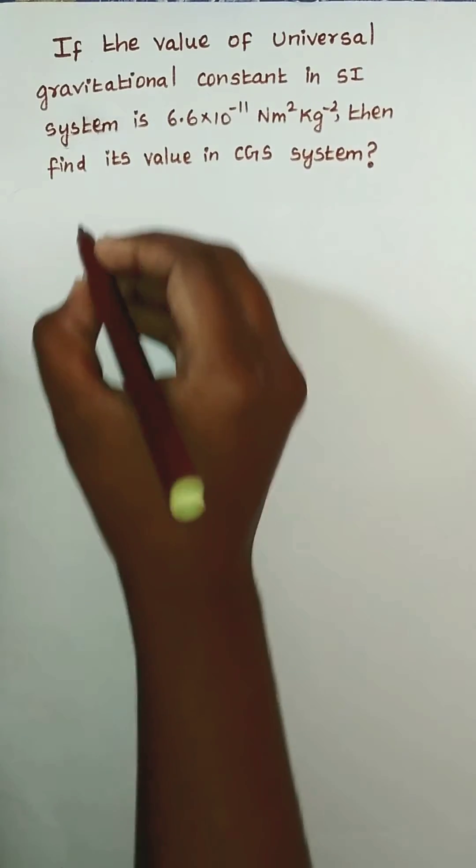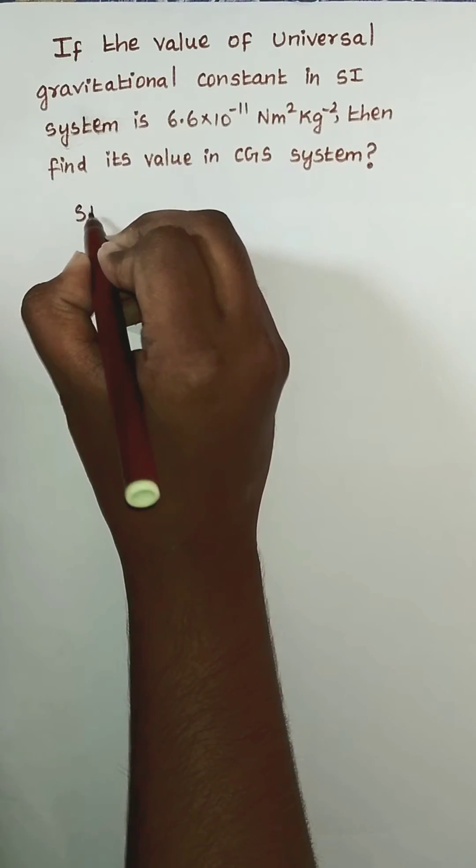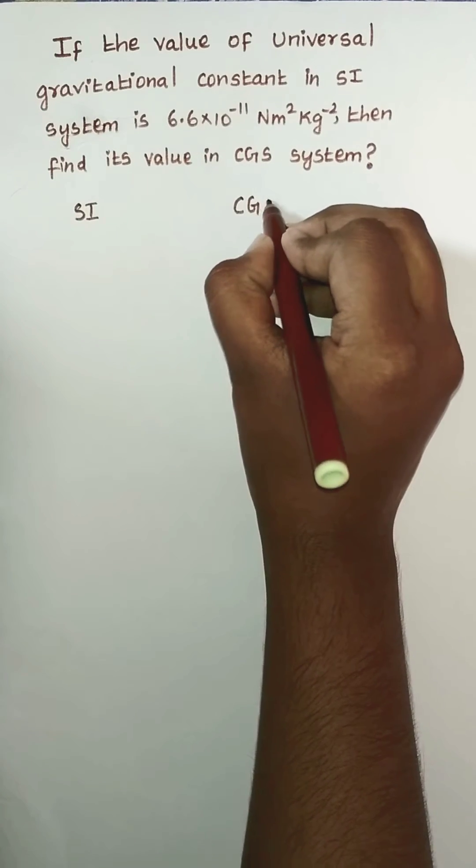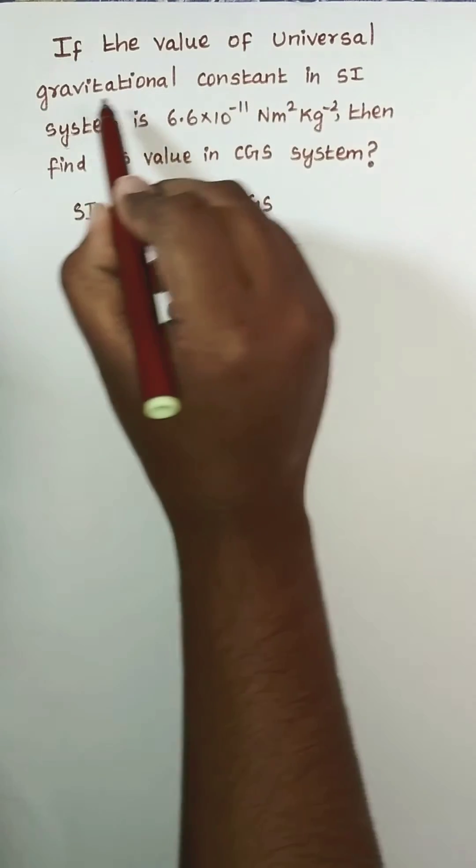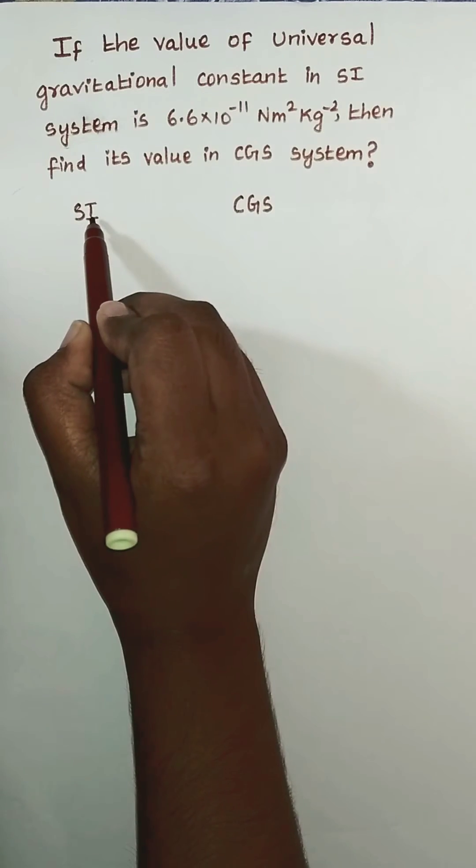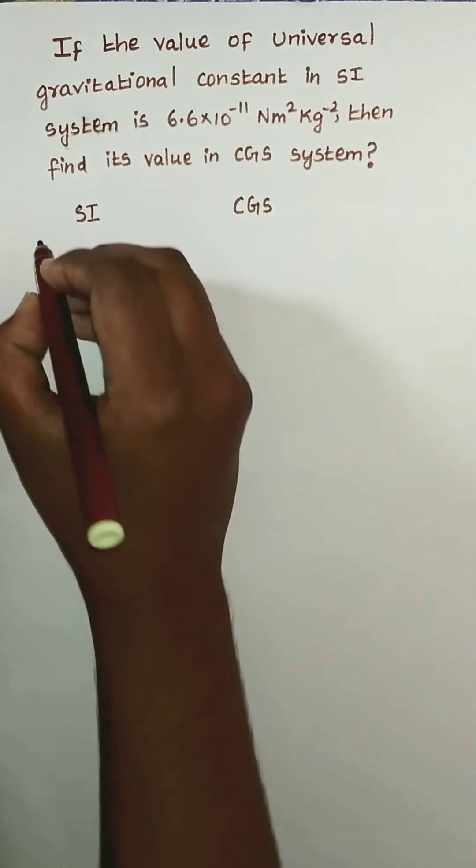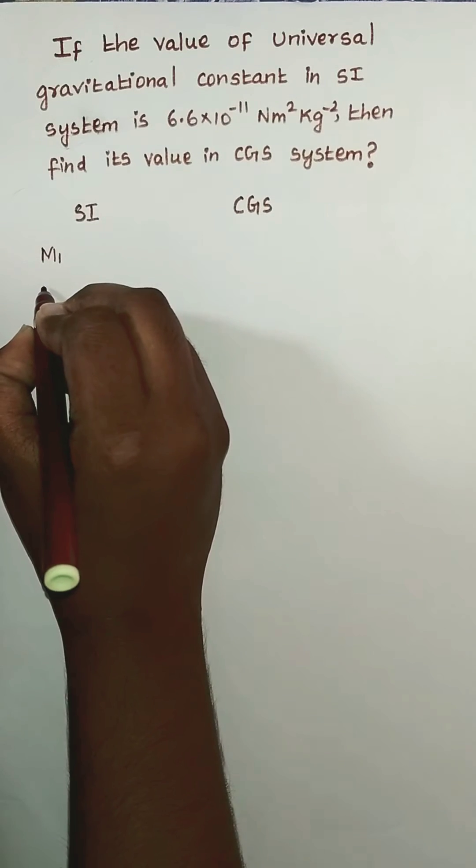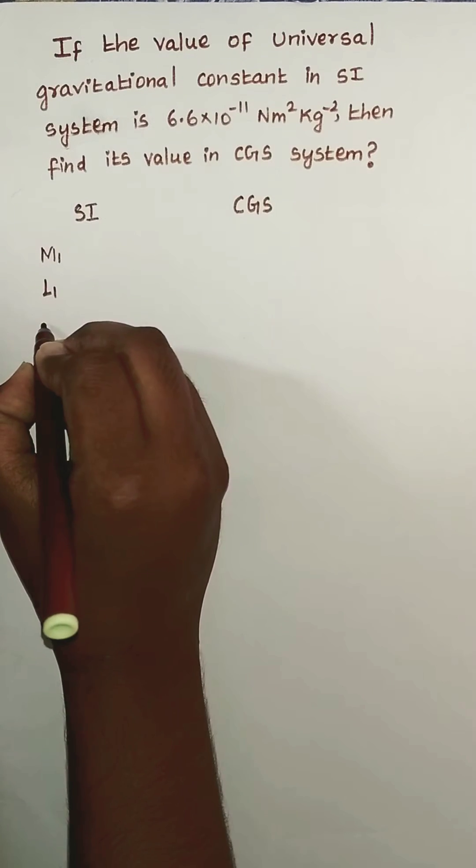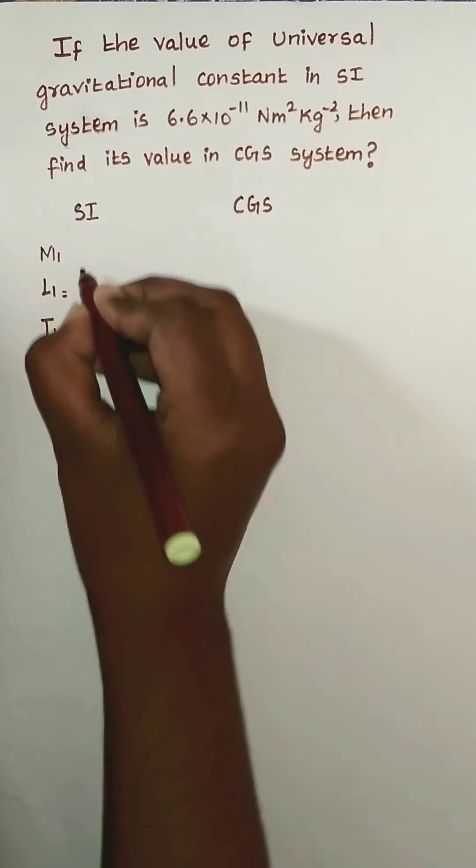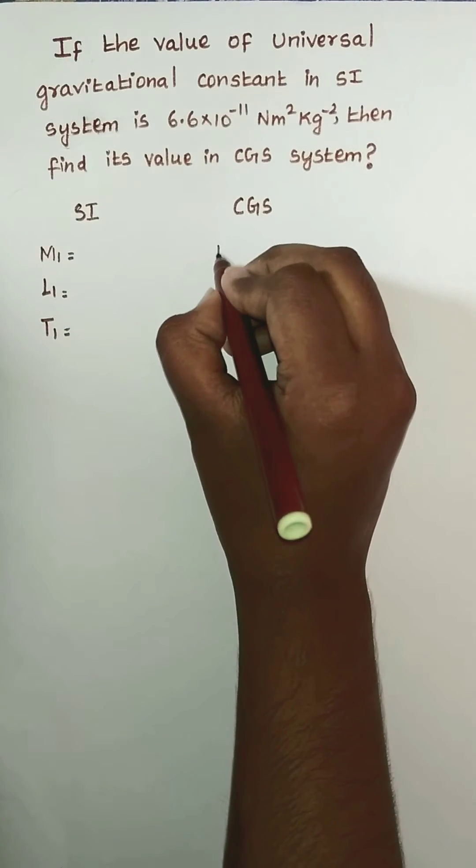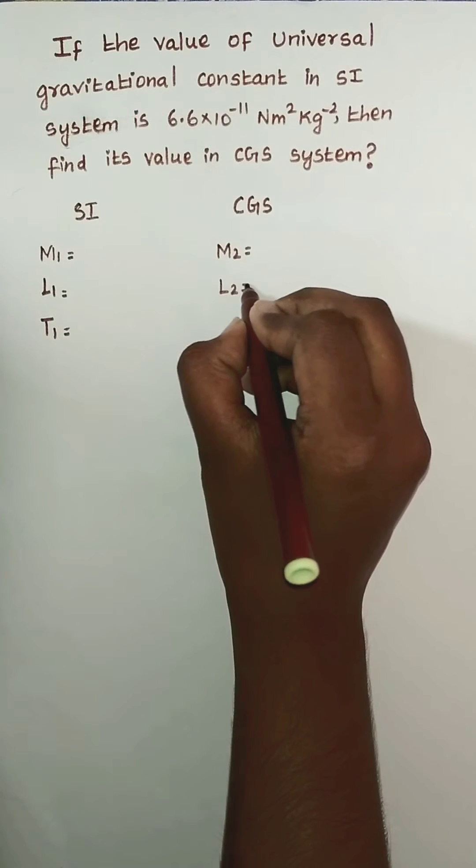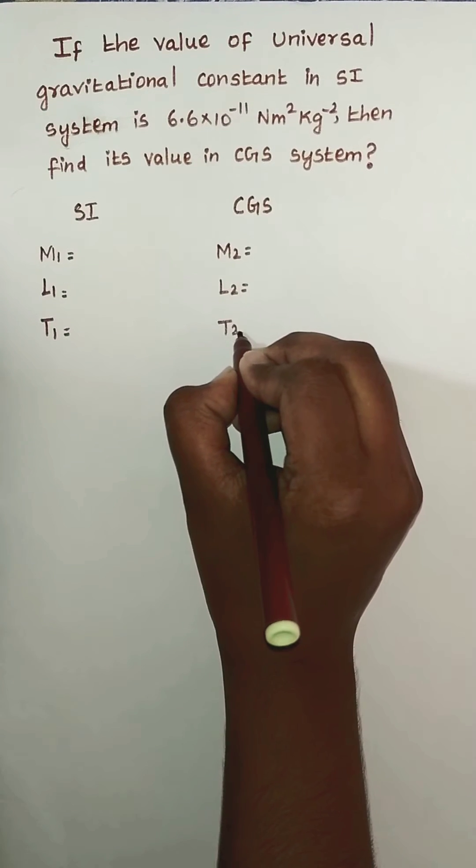Two systems are given. First one is SI system and another system is CGS system. We are going to convert gravitational constant from SI system to CGS system. In SI system, take mass value as M₁, length value as L₁, time as T₁. Same way, in CGS system, take mass as M₂, length as L₂, and time as T₂.